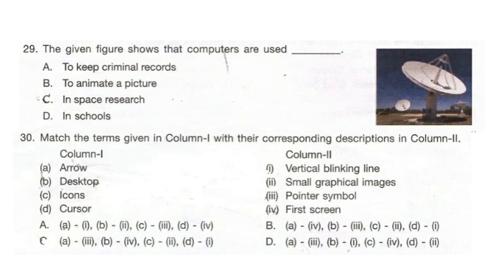Question 30: Match the terms given in column 1 with their corresponding descriptions in column 2. Column 1 shows: arrow, desktop, icons, cursor. Column 2 has: 1. vertical blinking line, 2. small graphical images, 3. pointer symbol, 4. first screen. The correct answer is option C: arrow is pointer symbol, desktop is first screen, icons are small graphical images, and cursor is a vertical blinking line.